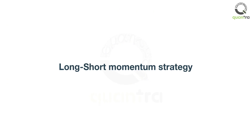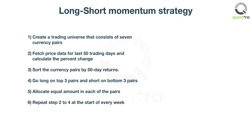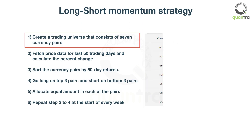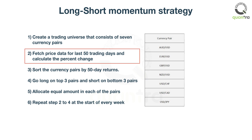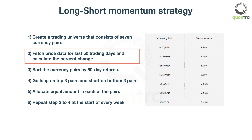Let us create a simple long-short momentum trading strategy. The logic works as follows. First, create a trading universe that consists of 7 currency pairs. Second, fetch price data for the last 50 trading days and calculate the percent change.